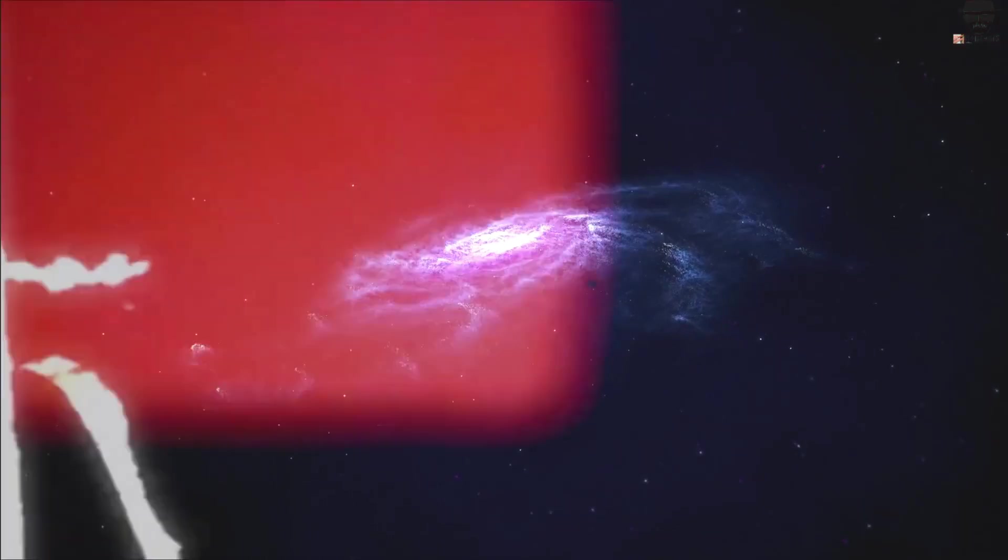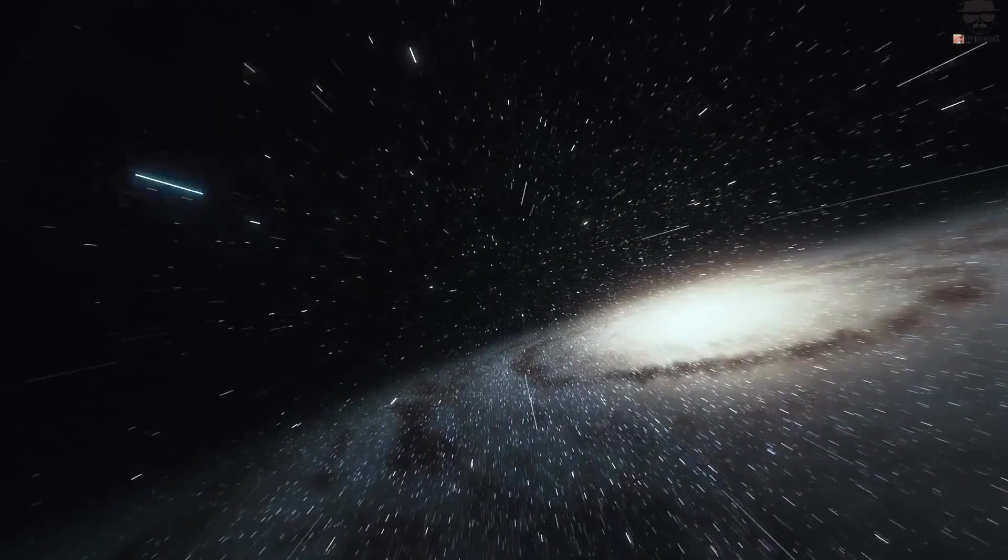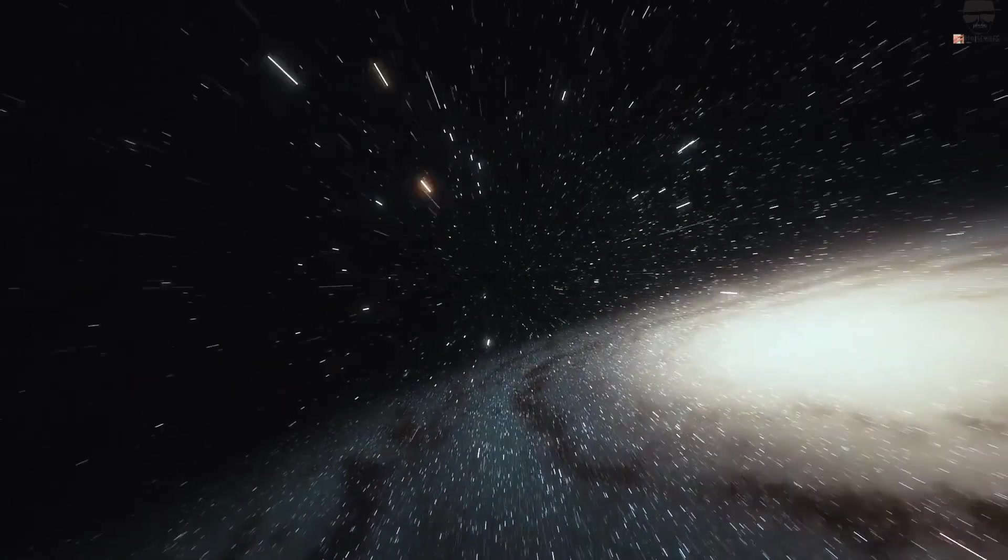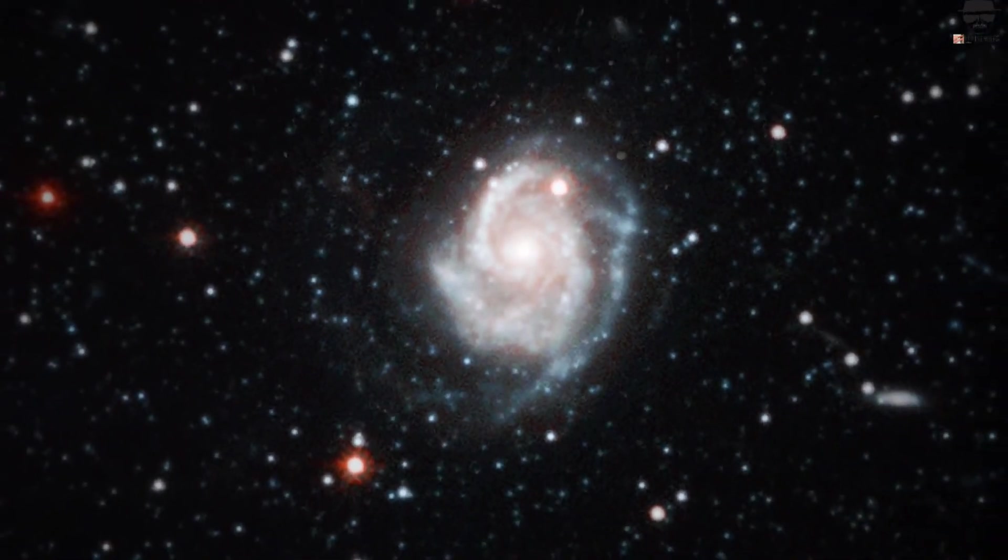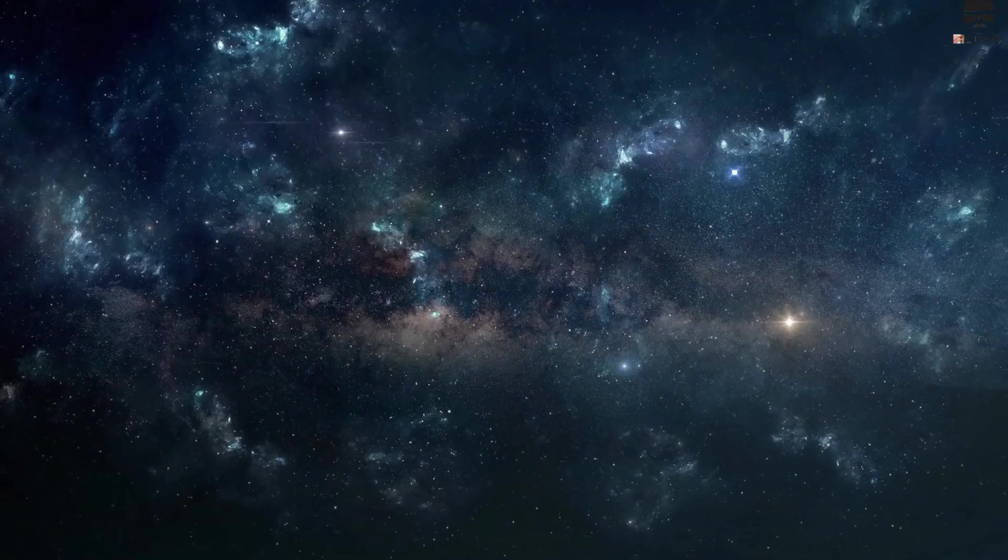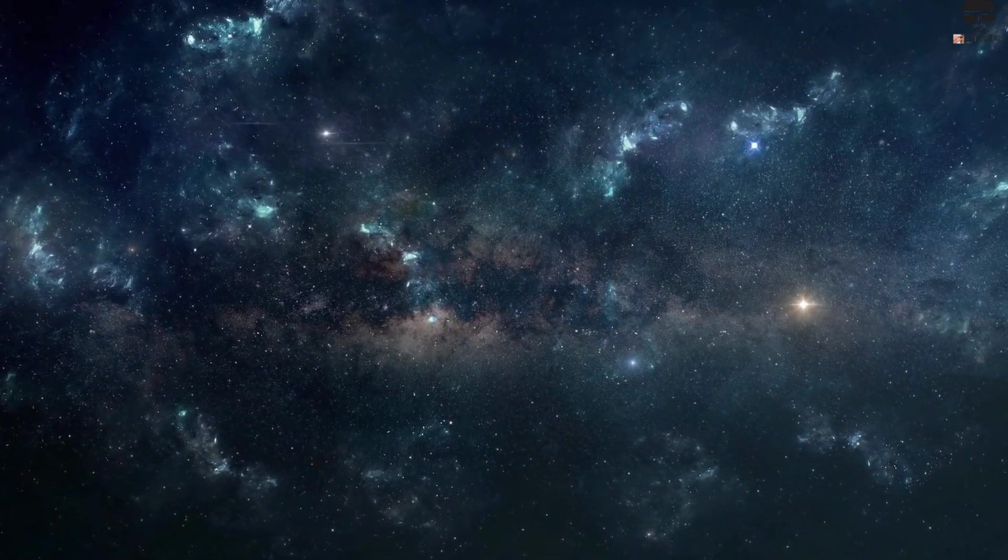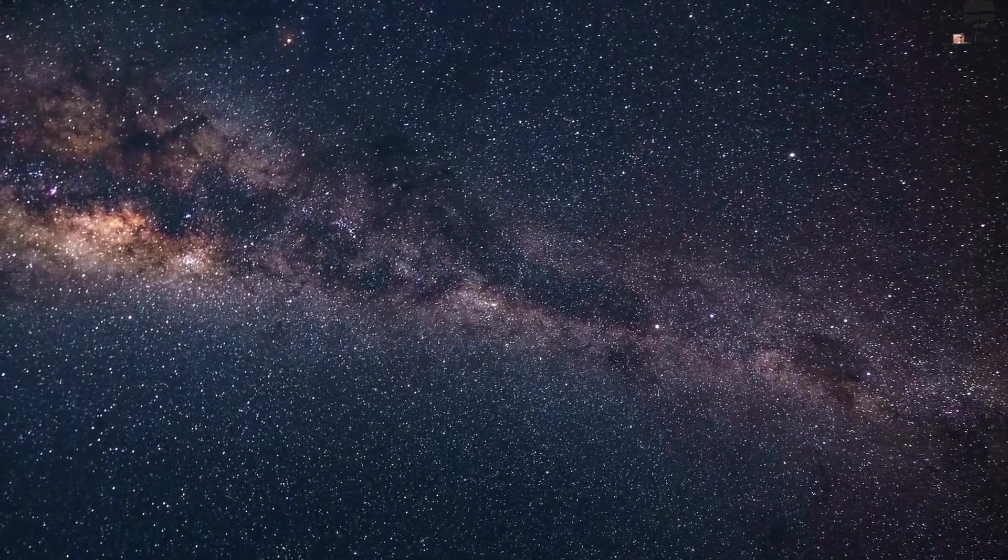The Andromeda Galaxy, also known as Messier 31 or M31, is a majestic spiral galaxy located approximately 2.5 million light-years away from our own Milky Way. That's a distance so vast that it's hard to even imagine. The light that we see from Andromeda today actually left the galaxy over 2 million years ago.